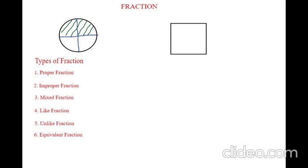So here, how should we write a fraction? Since there are four equal parts, the four — the total number of parts — will be written in the denominator, that is the bottom. And the number of parts which is shaded will be written up. We have shaded two parts, so we will write it as 2 by 4.